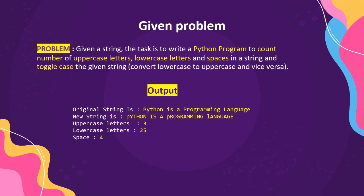Now we have a problem to solve using these functions. Given a string, the task is to write a Python program to count the number of uppercase letters, lowercase letters, and spaces in the string, and also toggle the case — converting lowercase to uppercase and vice versa. The example input is 'What is interesting is Python is a programming' and we will count uppercase letters, lowercase letters, and spaces.